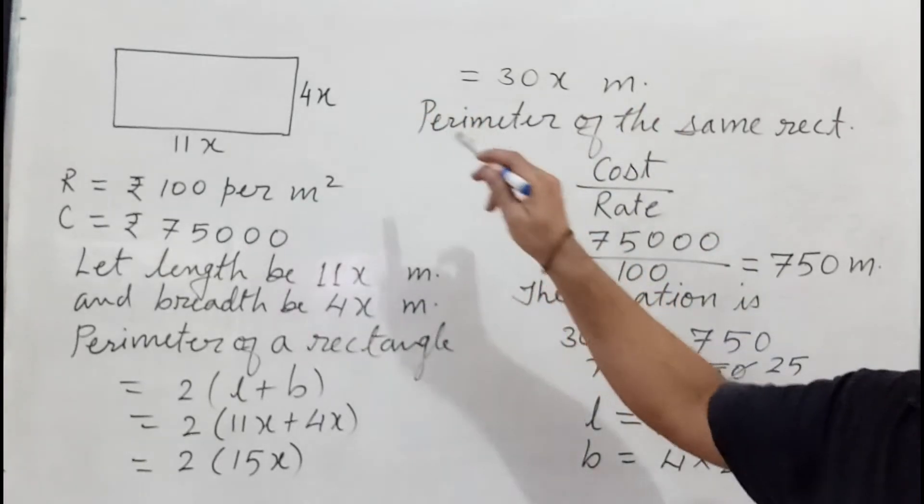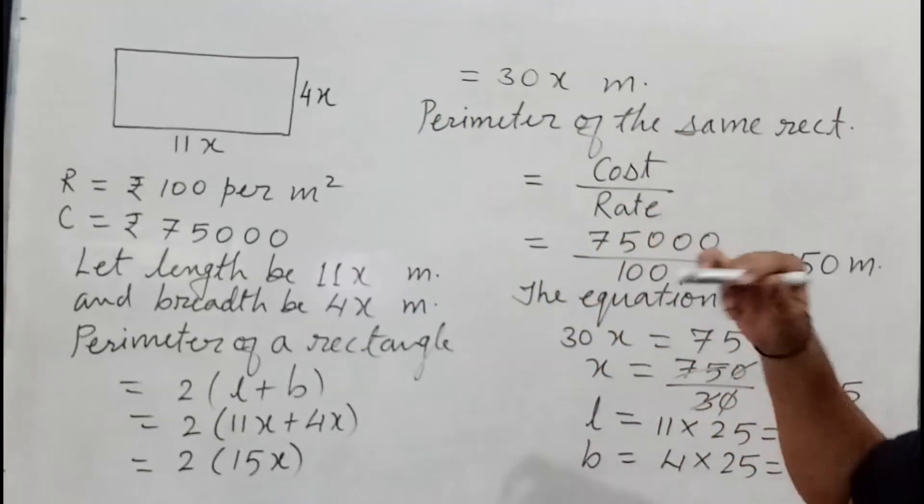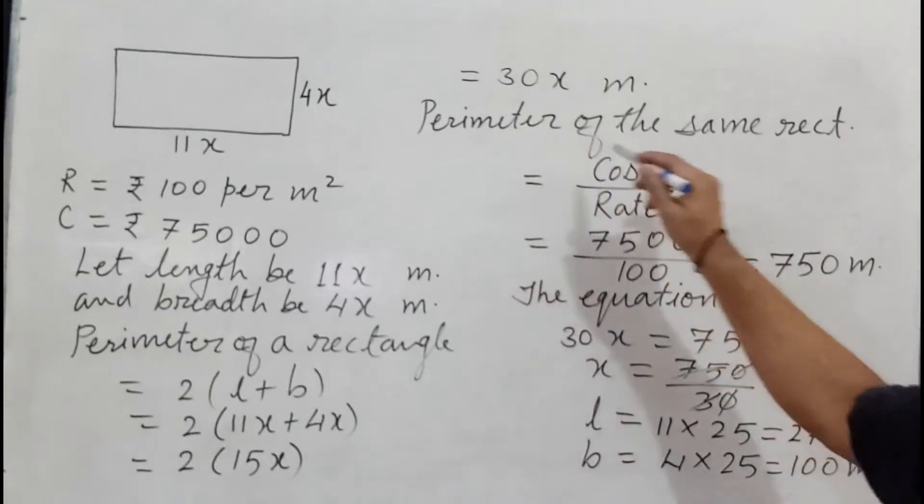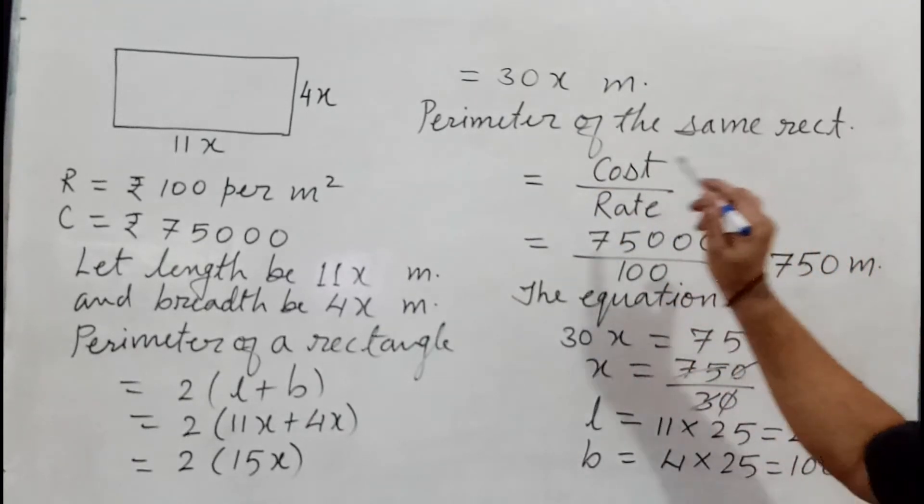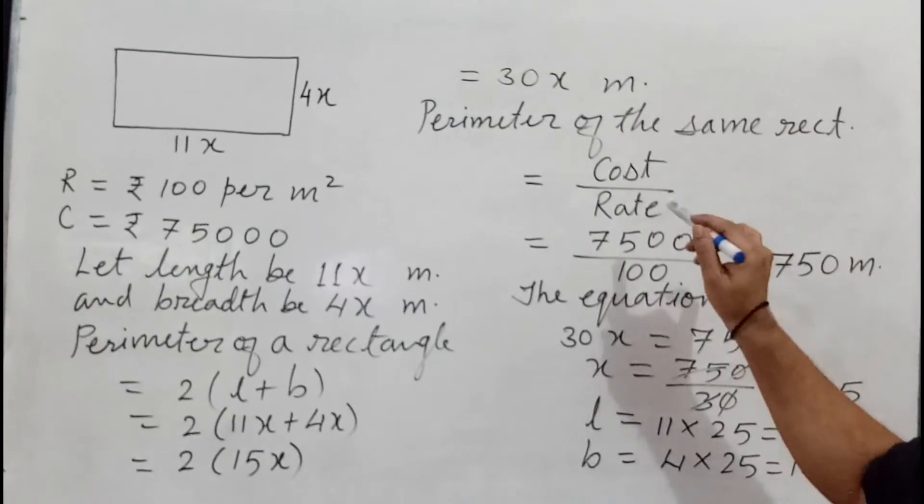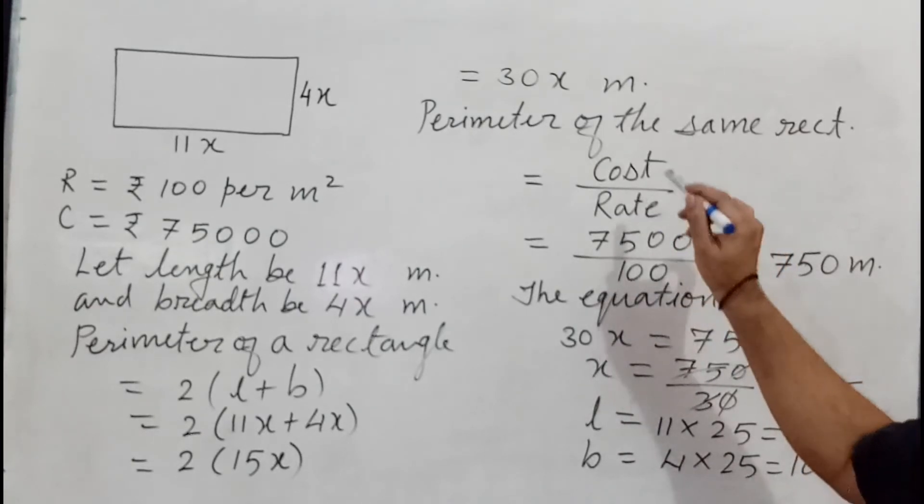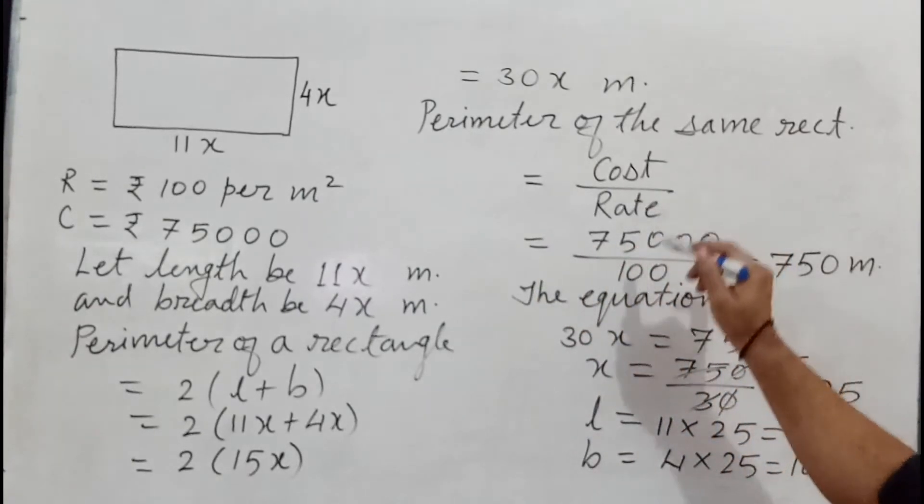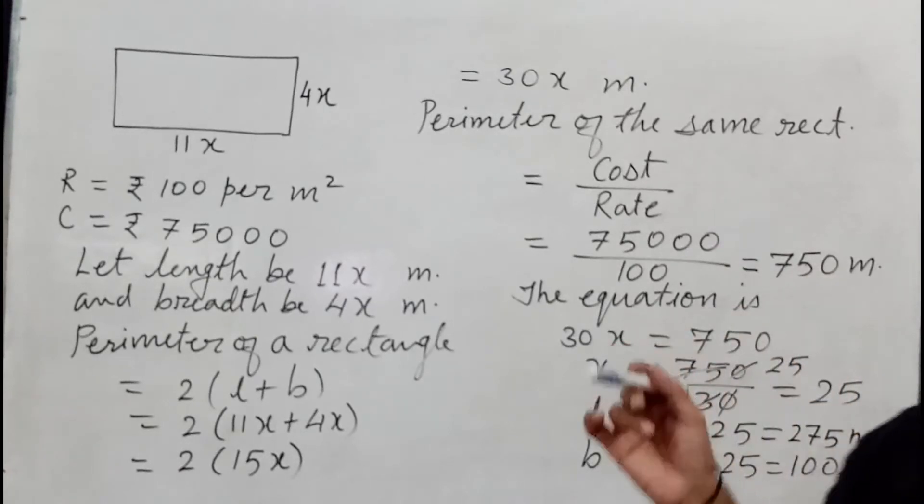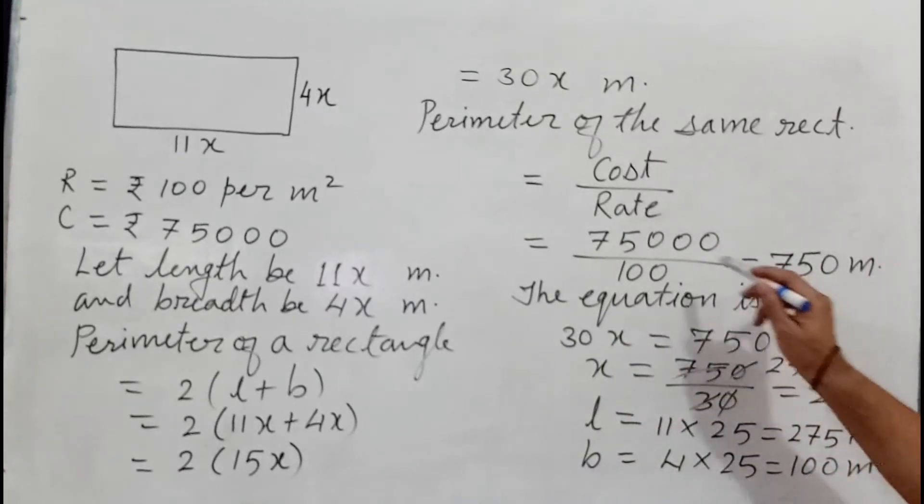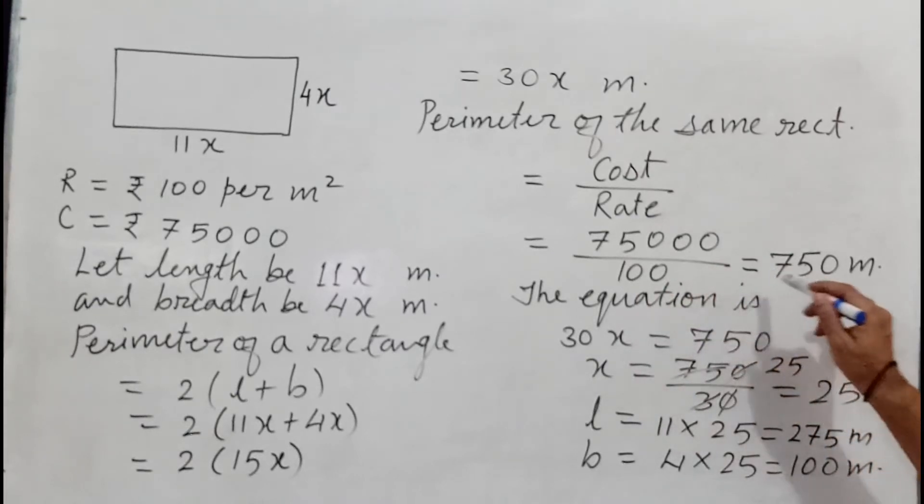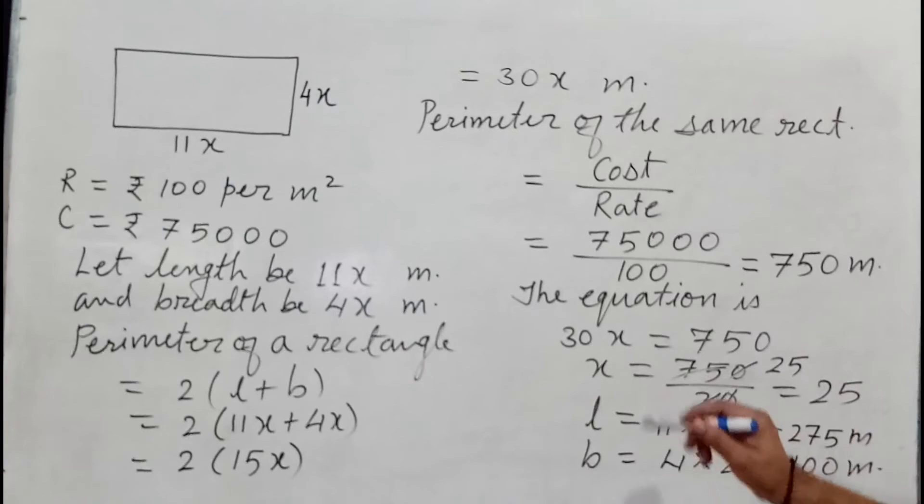Then we find perimeter of the same rectangular plot equal to cost upon rate. Why cost upon rate? Because cost and rate are given. When we divide that, then we get the perimeter of the same plot. So 75,000 divided by 100 becomes 750 meters.